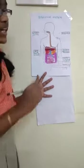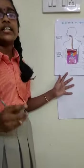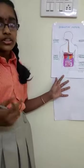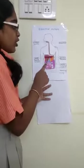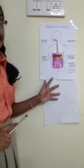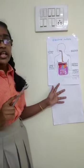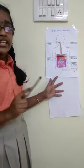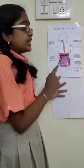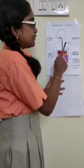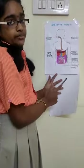The villi are present here. These are finger-like outgrowths, and there are thousands of them inside the wall of the small intestine. They help in the absorption of food. The absorbed food is transferred to the small blood vessels, which carry the food to all other organs of the body.